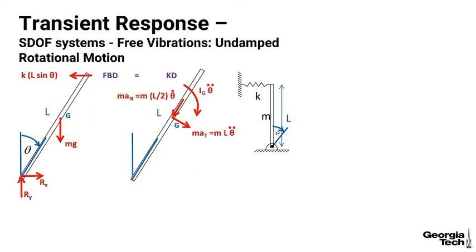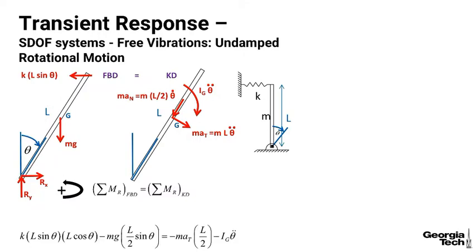So there's my free body diagram equals kinetic diagram. What do we do next? This should be getting to be old hat for you now. We're going to sum moments and come up with the equation of equilibrium. I'm going to choose to sum my moments about point R on my free body diagram, set it equal to the sum of the moments about R on my kinetic diagram. So I have K times L sine theta, which is the spring force times its moment arm. Its moment arm is this distance, which is capital L, L here times cosine theta.